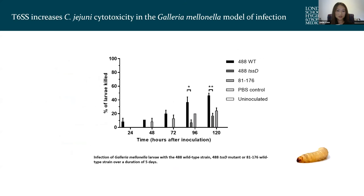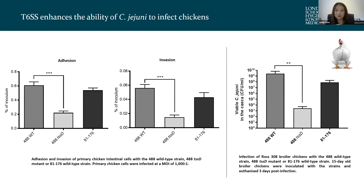We wanted to see whether the type 6 causes more cytotoxicity in a host model. We used the Galleria mellonella infection model with larvae of the greater wax moth, injecting three strains: the 4A8 wild type, the 4A8 TssD mutant, and the type 6 negative A1176 lab reference strain. At days 4 and 5, the 4A8 wild type was significantly more cytotoxic than the TssD mutant and A1176. In chicken primary intestinal cells, the 4A8 wild type showed significantly higher levels of adherence and invasion than the TssD mutant and A1176.